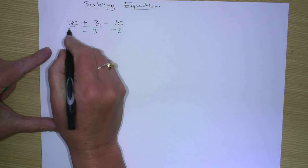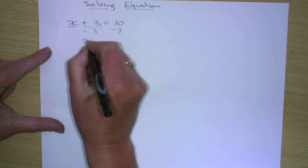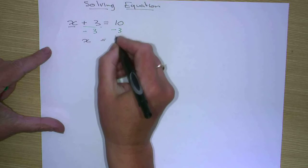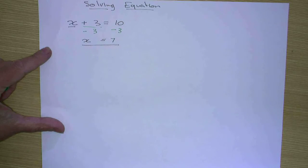So in this case, we can now have x plus 3 minus 3 leaves us with the x, and 10 minus 3 leaves us with 7. And that's our answer, x equals 7.